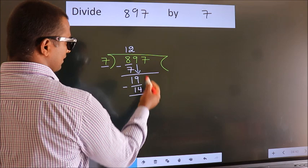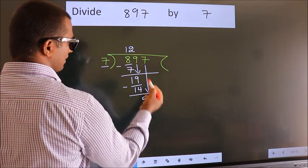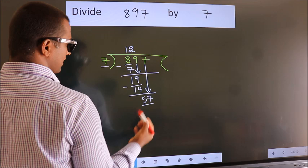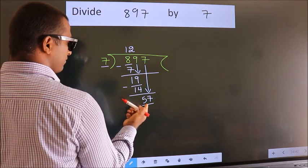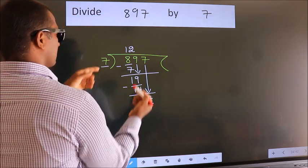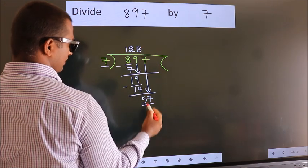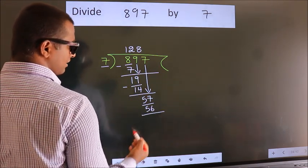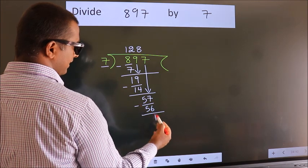After this, bring down the beside number. So 7 down. So 57. A number close to 57 in 7 table is 7 eights 56. Now we subtract. We get 1.